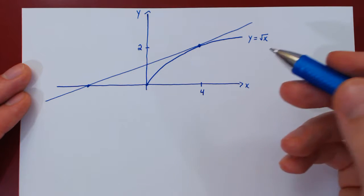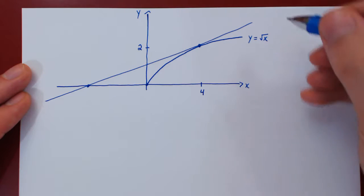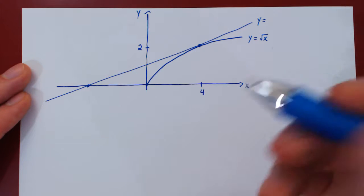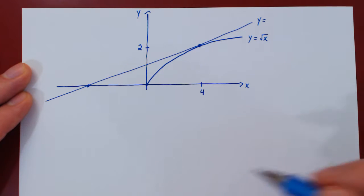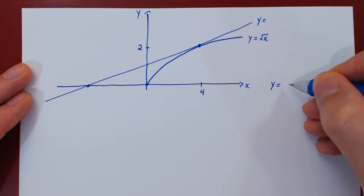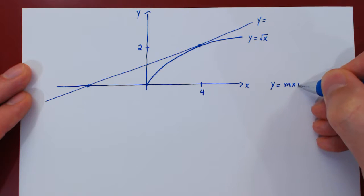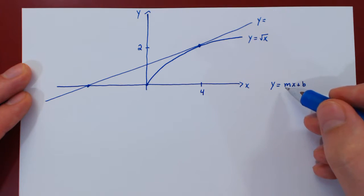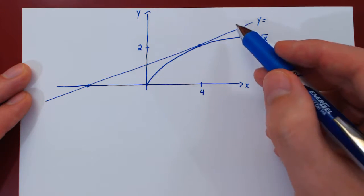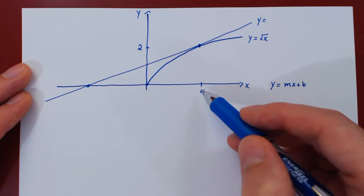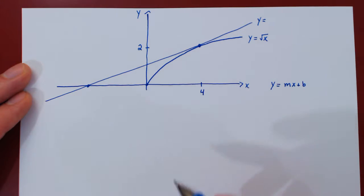How do we find the equation of a tangent line? The equation of a tangent line is a line, so y equals mx plus b. m, if you recall, is the slope of the line — therefore the derivative of the function at x equals 4.